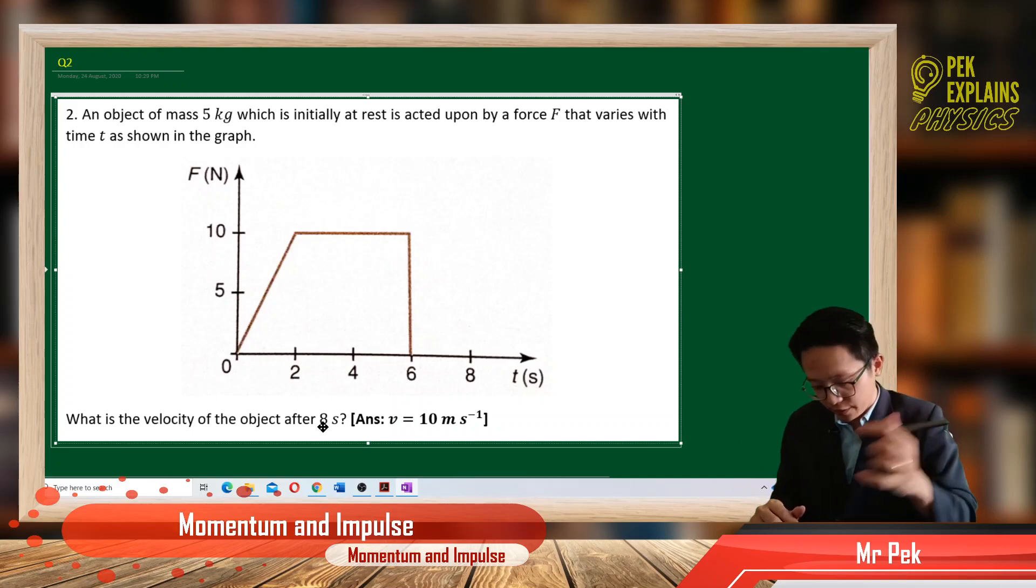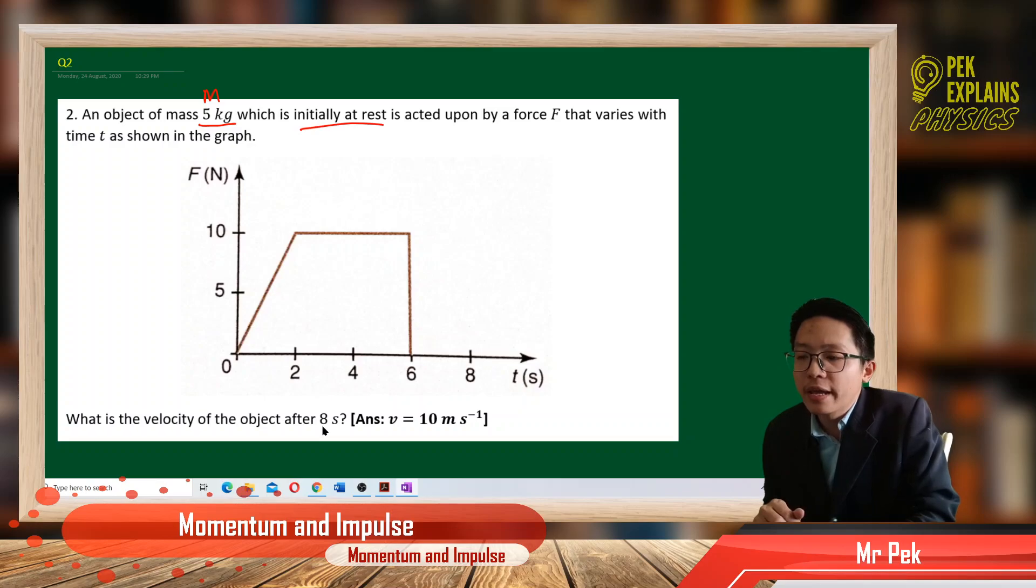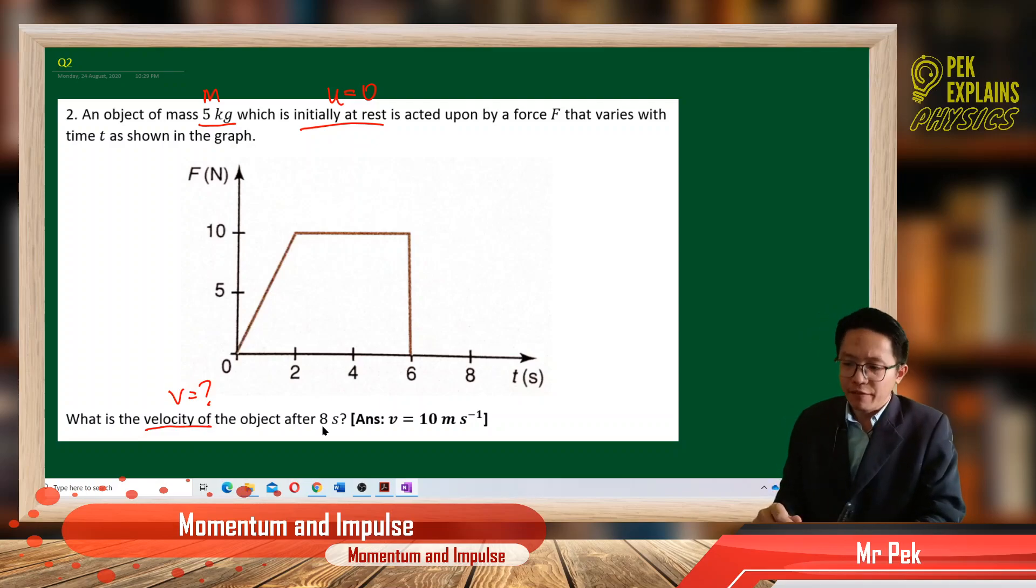So what information does it give us? Let us write out all the information. We have the mass 5 kilograms, initially at rest. This is initial velocity equal to 0, and then we have a force-time graph. What is the final velocity after 8 seconds? So we want to find the final velocity after 8 seconds.